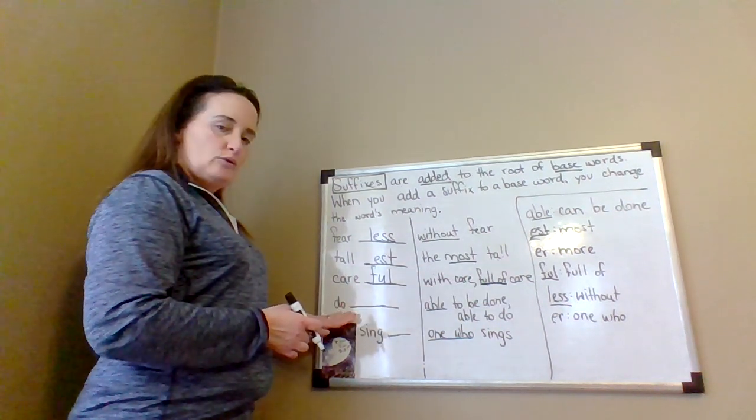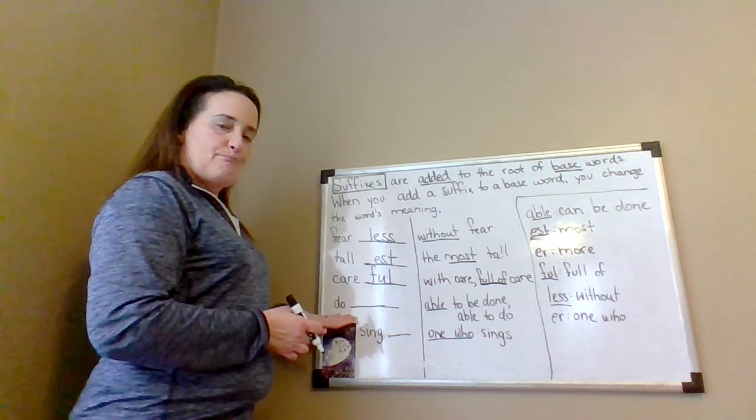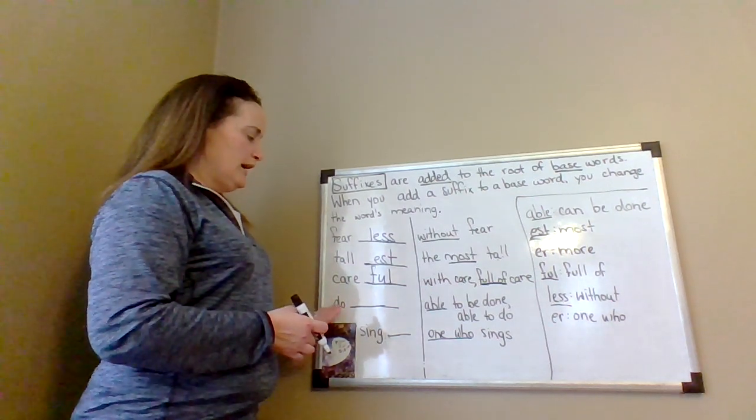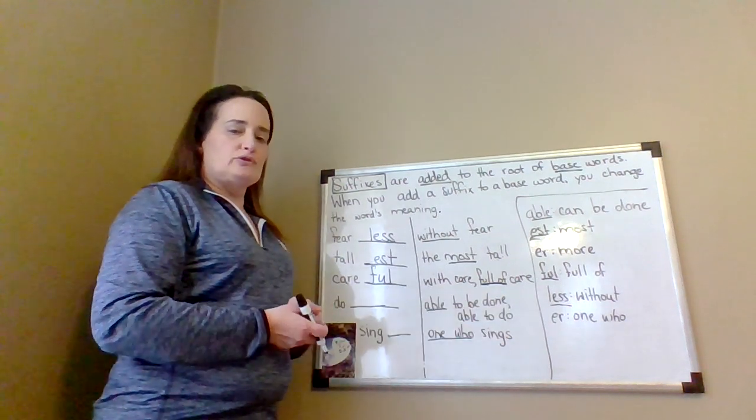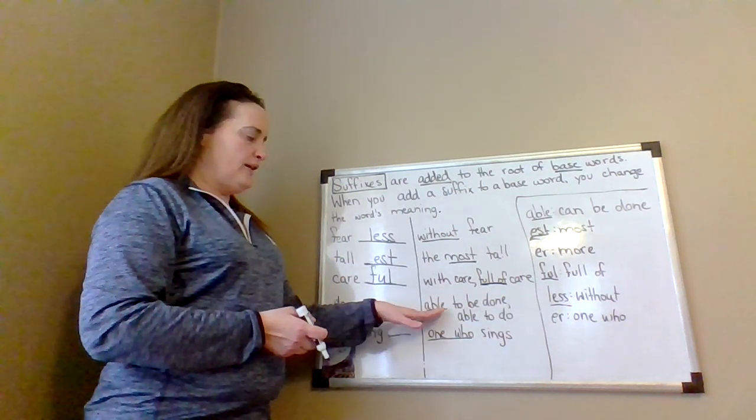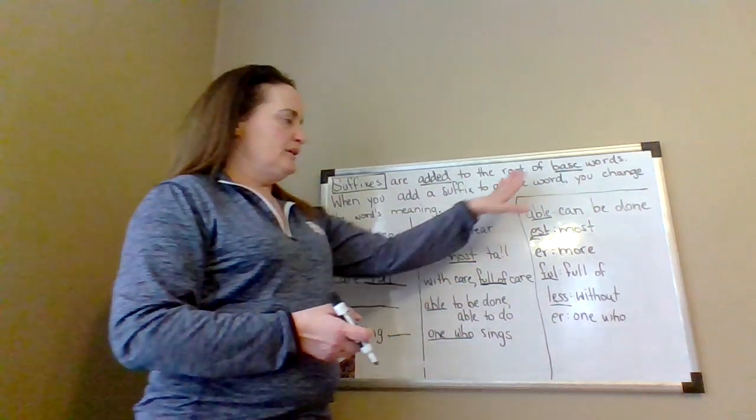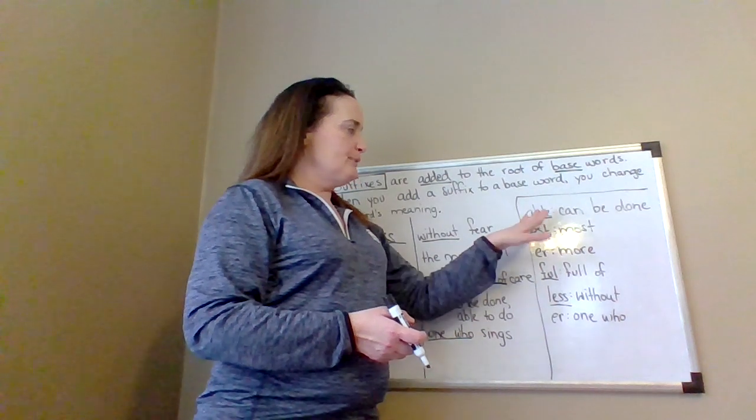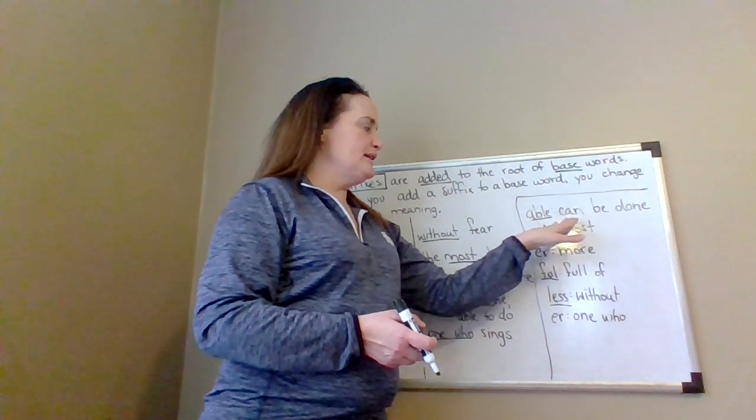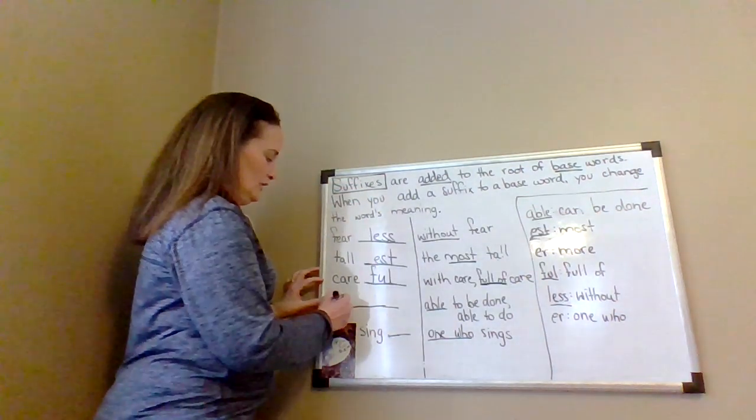The next word starts with the base 'do' and the whole word is going to mean able to be done or able to do. So I'm going to find the word 'able' in our suffix bank. Able means can be done - doable.